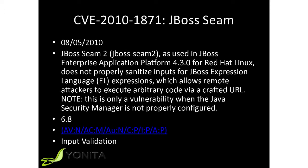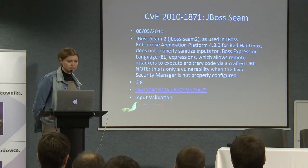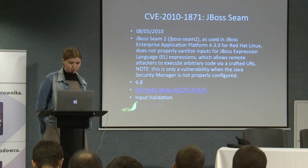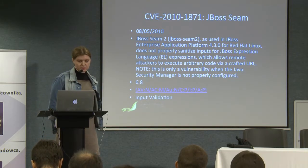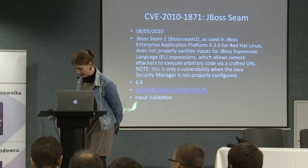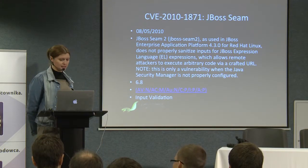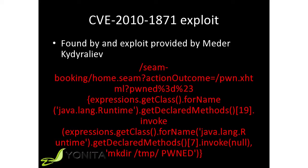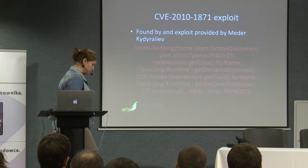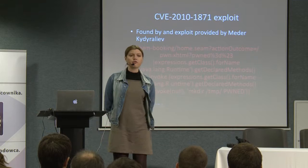Another example: a JBoss vulnerability that allows remote attackers to execute arbitrary code via a crafted URL — again very simple to exploit, requiring only a special URL. The category of this exploit is input validation. The actual exploit combines reflection and escaping. This is usually the biggest problem and the shadiest area of all web frameworks.